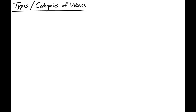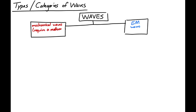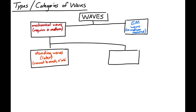When we talk about waves, we split them into two categories: mechanical waves and electromagnetic waves. Mechanical waves require a medium — that's most waves we'll encounter. Electromagnetic waves are a special type that do not require any medium; they can travel through vacuum. Mechanical waves are further split into standing waves and traveling waves. We'll focus on traveling waves — these are waves which move through a medium.